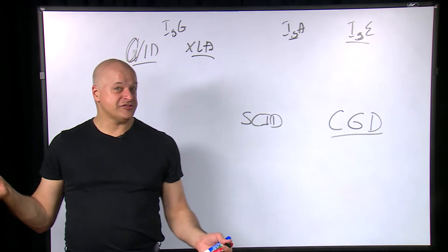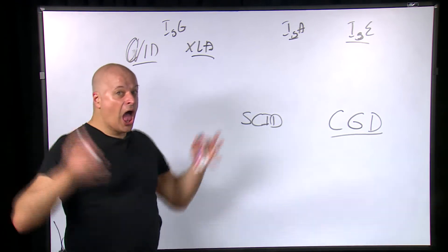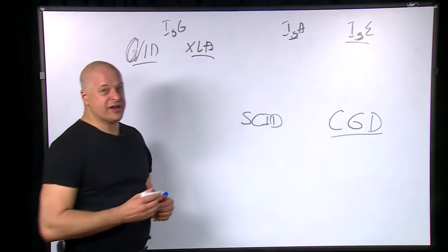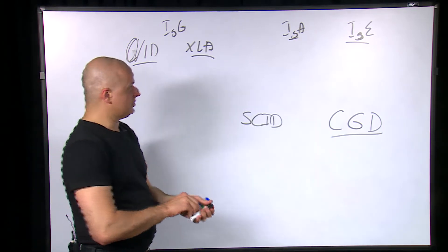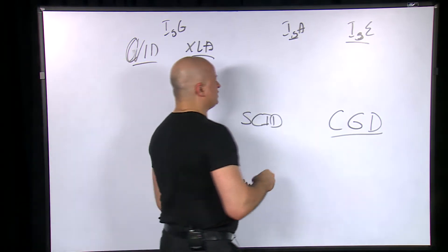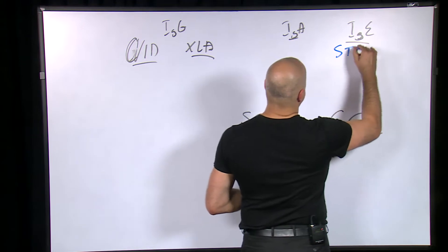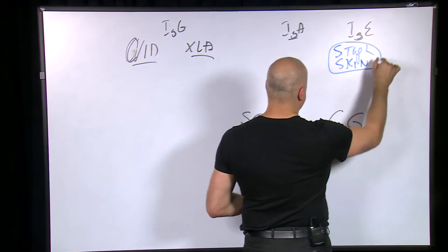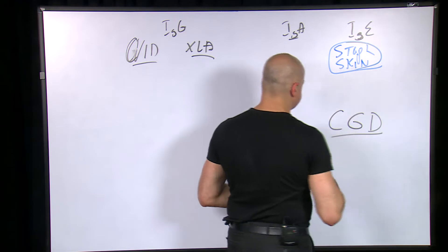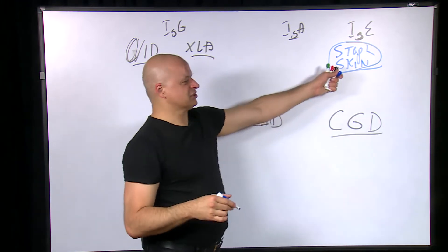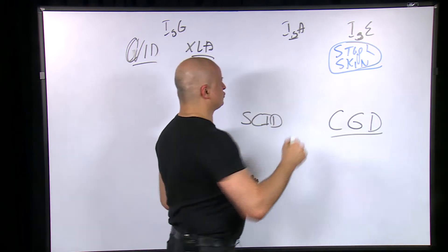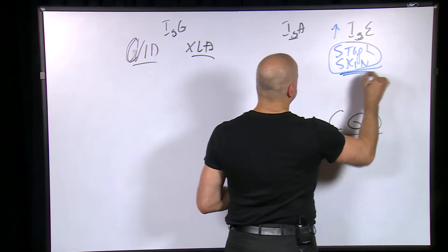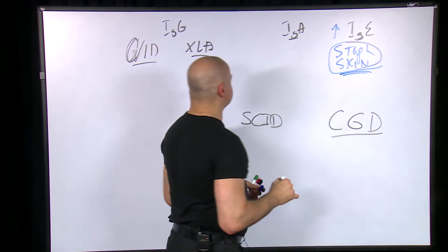Which of these present as infections? All of them. The easy one: IgE is staph of the skin. Hyper-IgE syndrome — chronic pustular hyper-IgE syndrome — presents with staph of the skin and cold abscesses.